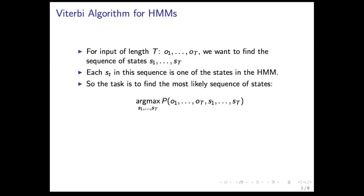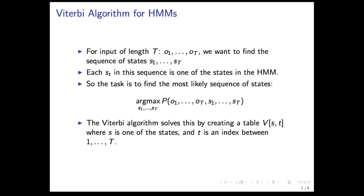In the last module we saw that we could enumerate all of the s1 through sT sequences and score them — the naive argmax model: create a list, sort it by probability, and take the first element. Unfortunately, that was exponential time. So in this series of slides we're going to look at an algorithm that does something better: it creates a dynamic programming table, which we call V for Viterbi, indexed by each state and each index of the observation sequence.